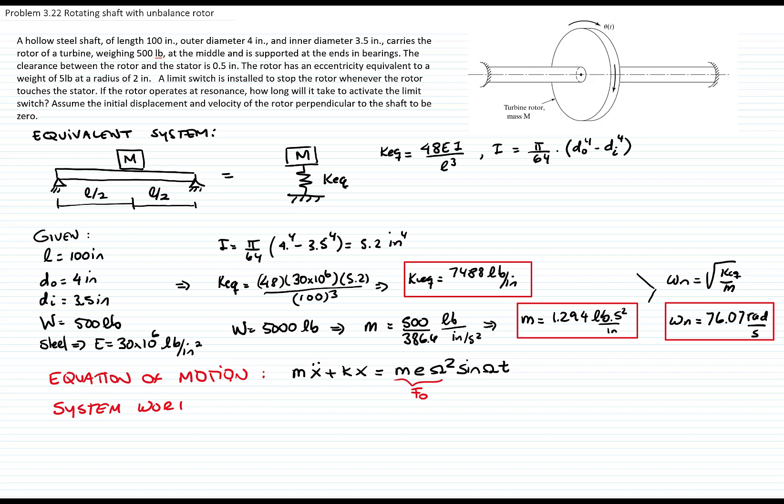The system is working in resonance. We are told that in the wording of the problem, therefore we know that r is equal to 1. And therefore, omega is equal to omega n, which is 76.07 radians.